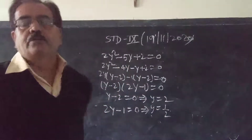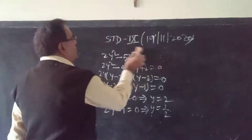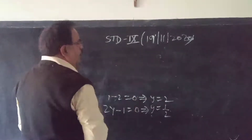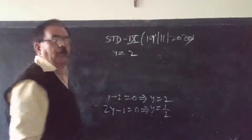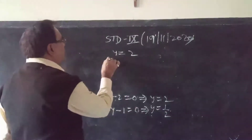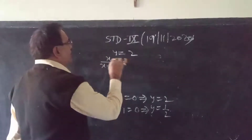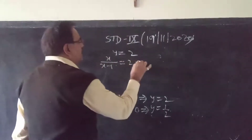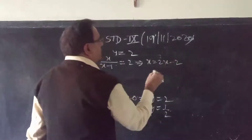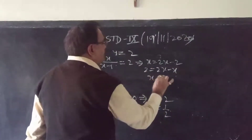But y is not the required variable — we had supposed y = x/(x−1). So let's substitute back the value of y. For the first case, y = 2: x/(x−1) = 2, which gives x = 2x − 2, so 2 = 2x − x, therefore x = 2.